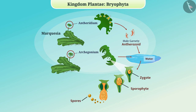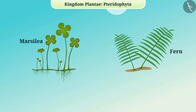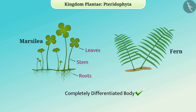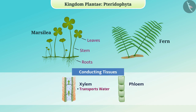Now let's understand Pteridophyta. Plants of the type Marsilea, fern, and others are included in Pteridophyta. This class consists of all those plants whose body develops completely into roots, stems, and leaves — their body is completely differentiated. They have specific tissues for the transport of water and other necessary substances from one part of the body to another; we call these conducting tissues. Xylem tissue transports water, while phloem tissue transports food and other substances.